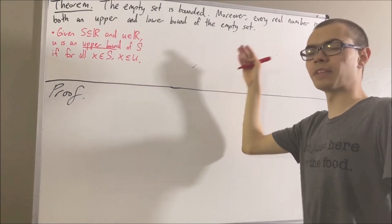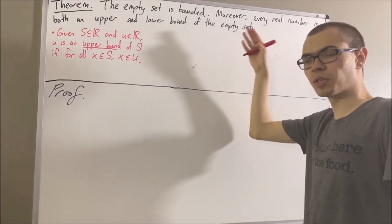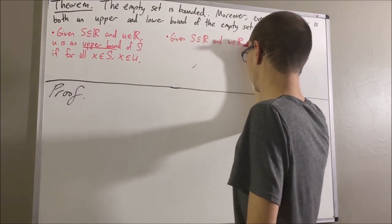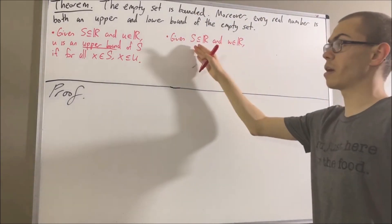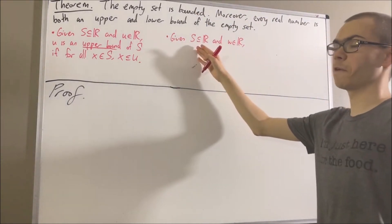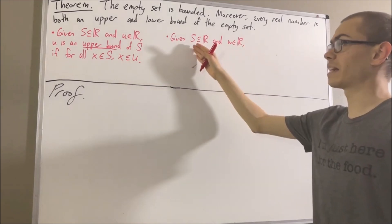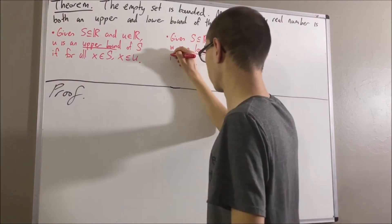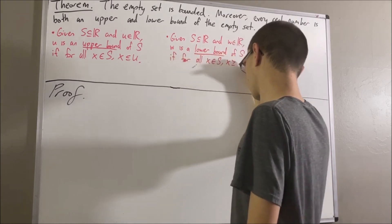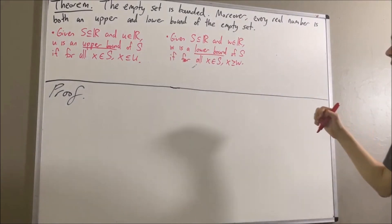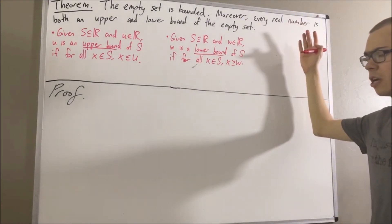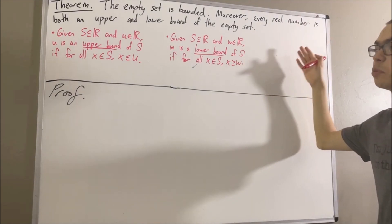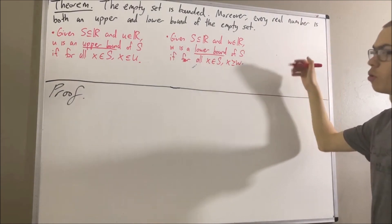Second, given any subset of real numbers s and real number w, we say that w is a lower bound of s if, for every element x in s, x is greater than or equal to w. Finally, given a subset of real numbers s, we say that s is bounded if s has both an upper and lower bound.